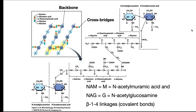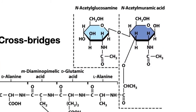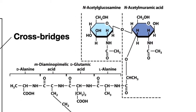Peptidoglycan contains a backbone made from N-acetylglucosamine, also abbreviated as NAG or G in this figure, and N-acetylmuramic acid, NAM or M. This backbone is linked by beta-1,4 linkages, which are covalent bonds.